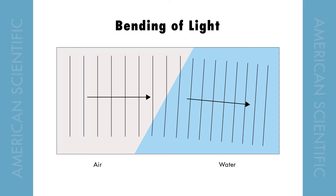But when light enters a transparent medium like water or glass, the velocity of the light beam will slow down based on the medium's density, and in order to maintain the wave integrity, the light must bend.